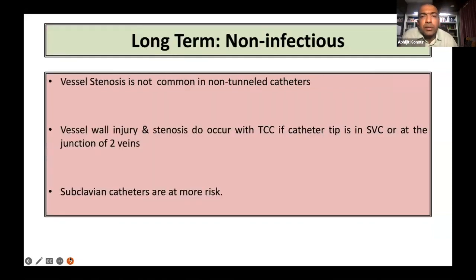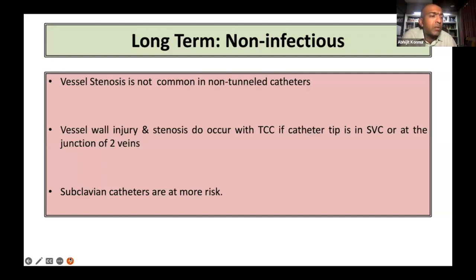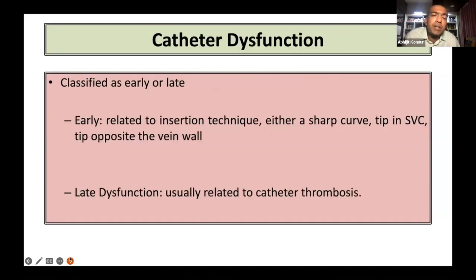Long-term non-infectious complications: vessel stenosis is not uncommon in non-tunnel catheters, and this occurs because of vessel wall injury and stenosis due to prolonged tunnel-cuff catheter use, especially if the catheter tip is in the superior vena cava or at the junction of the two veins. Subclavian catheters are at exceedingly high risk, and nephrologists usually frown when they see anything in the subclavians — whether it be hemodialysis catheters, PICC lines, or even sometimes ports. Catheter dysfunction is classified as early or late. Early catheter dysfunction may be related to insertion technique, where there is presence of sharp curves, the tip being in the superior vena cava, or the tip stuck to the opposite venous wall, leading to flow issues. Late dysfunction is usually related to catheter thrombosis.